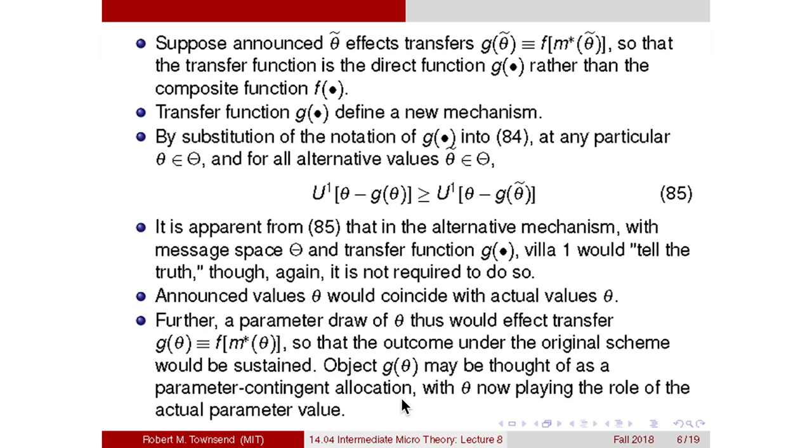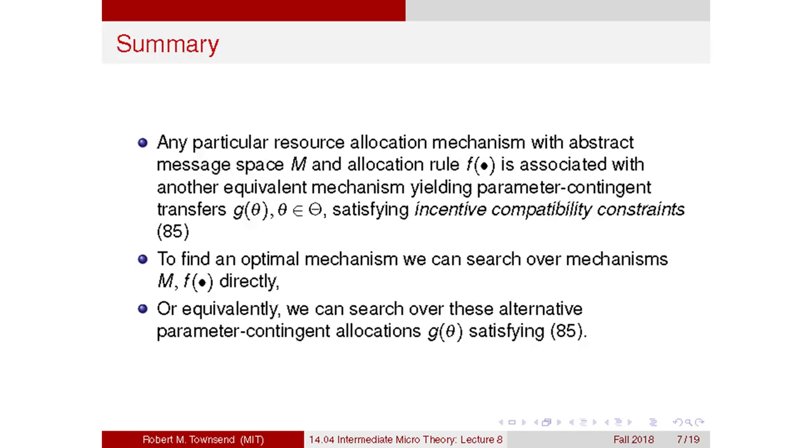So just like before, when we had states of the world, we talked about state contingent allocations, like gift giving, the risk sharing rules. Here again, we're enumerating these states, epsilon in this case, and we can talk about state contingent allocations. So the method is exactly the same as before, as long as we append on to the system constraints like 85. Another way to say that is all of the consequences of private information are captured by 85. So we can go and do our thing with the programming problems, maximizing lambda weighted sums of utilities, subject to resource constraints, and just append on these extra so-called truth telling constraints. So we don't have to search over abstract message spaces, because what's the limit of that? Anybody can come up with a message space. It's too abstract and not very specific. We restrict the message space, but without loss of generality. And anything we could have done in an abstract way with M and F, we can now do with theta and G.